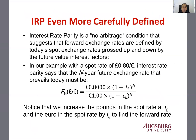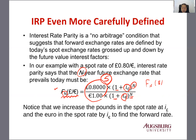More precisely, for the generalized Nth-year case, the N-year forward rate equals the spot rate today times one plus the domestic interest rate to the Nth power, divided by one plus the foreign interest rate to the Nth power. For example, the N-year forward rate between the US dollar and pound equals the spot rate times one plus the dollar interest rate to the Nth. That is how to calculate the multi-year forward rate.